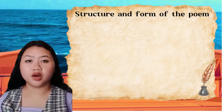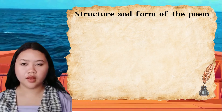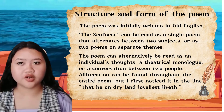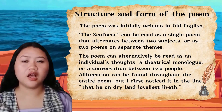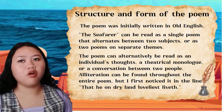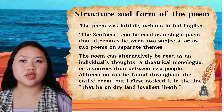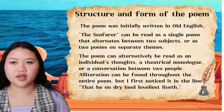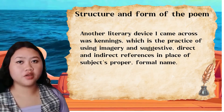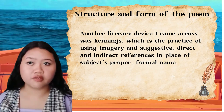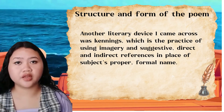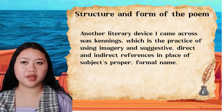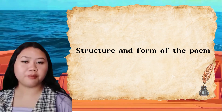Many of the Bard's famous sonnets conclude with a didactic couplet. The poem can alternatively be read as an individual's thoughts, a theatrical monologue, or a conversation between two people. Alliteration can be found throughout the entire poem, first noticed in the line 'he on dry land loved it as loved.' Another literary device is kennings — the practice of using imagery and suggestive direct and indirect references in place of a subject's proper name. And that's the structure of the poem, mateys.